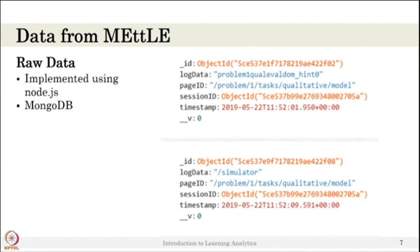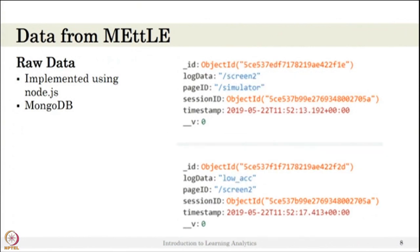In the second example, the student is on the simulator page. The student chose qualitative model and went to the simulator page. In another example, the student is on the simulator page but moved to screen 2—the simulator has two pages. In the next example, the student is changing the accuracy value in screen 2, between low and high accuracy values.